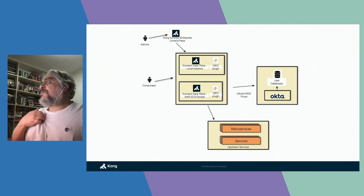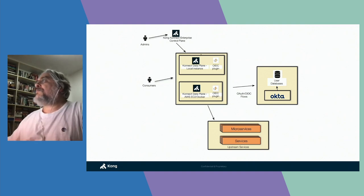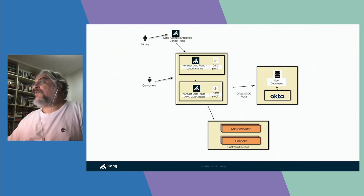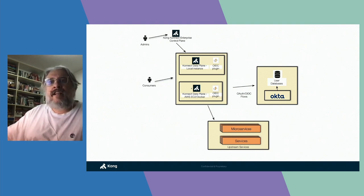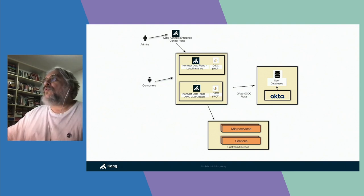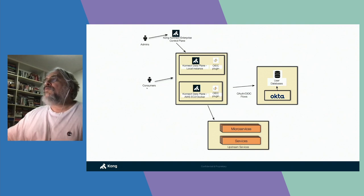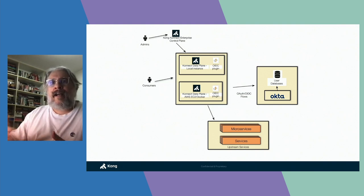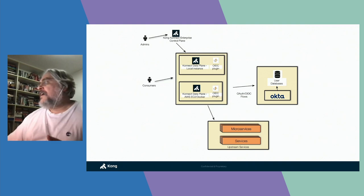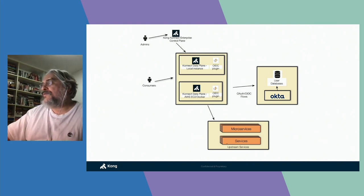In this simple diagram you can see I have two data planes running. The first one running on my local machine and the second one running as an EC2 instance in AWS, for instance. Every time I create a new API, it's going to be published in these two data planes, and then the consumers will be able to send requests to the data plane and consume the API and any upstream you might have behind it — your microservices, your services, and so on.